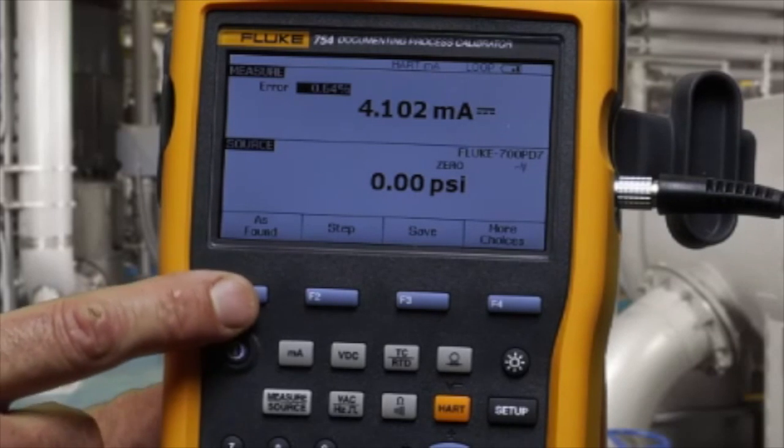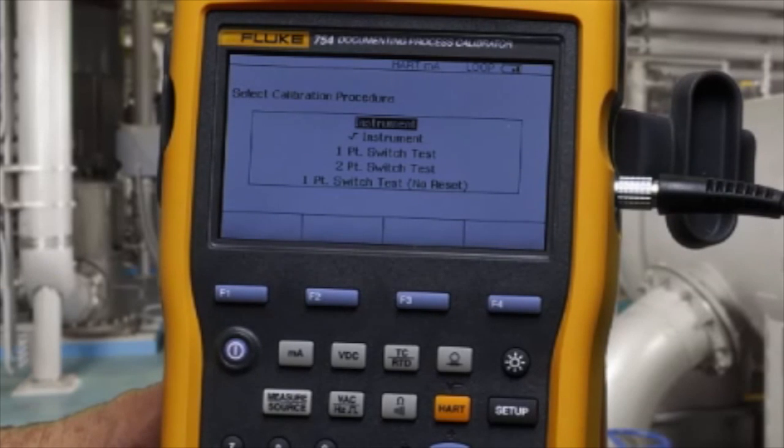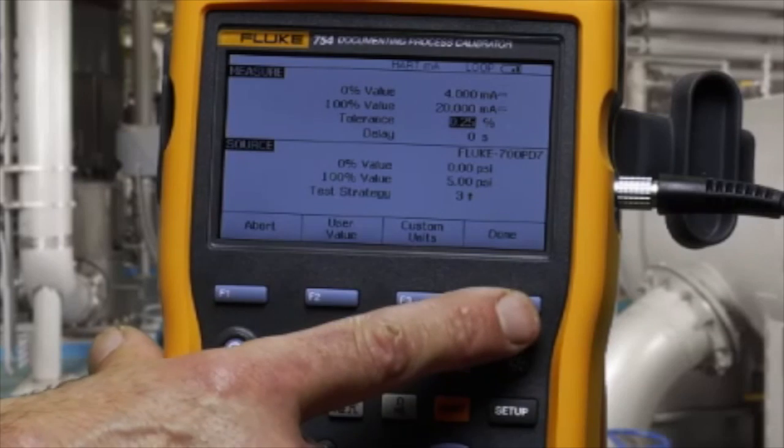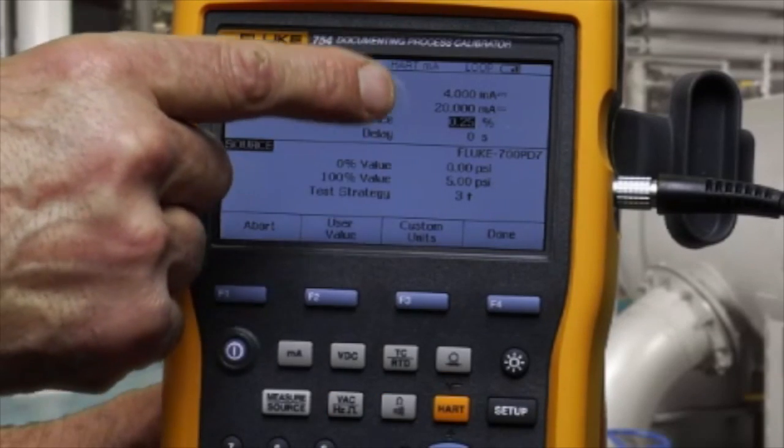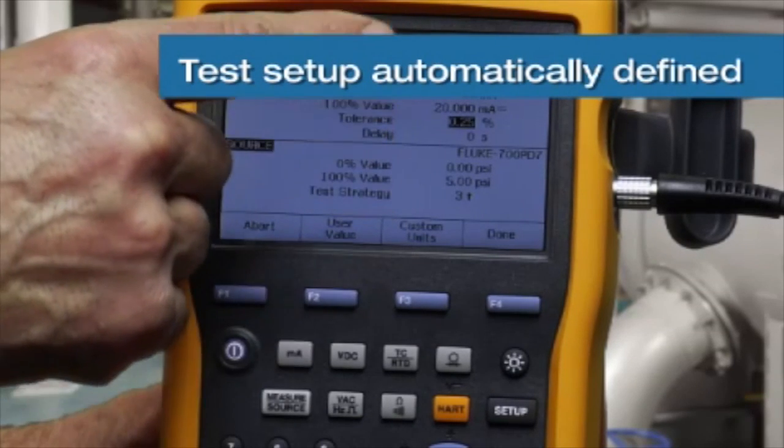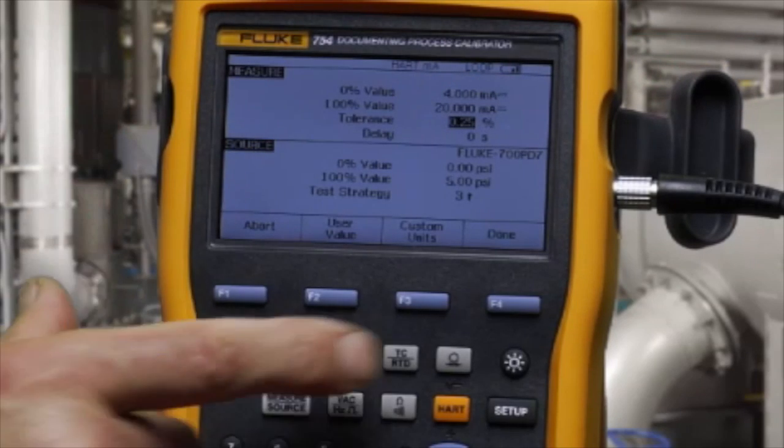To initiate the test as found for an instrument, everything is filled in. Confirm your test tolerance. You'll see the applied pressure values, zero and five PSI, for which we'll measure four to twenty milliamps to 0.25%.